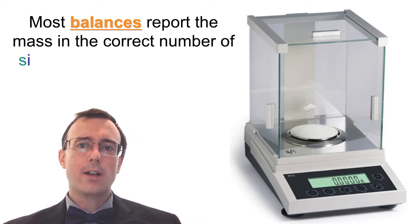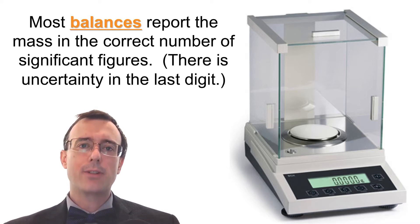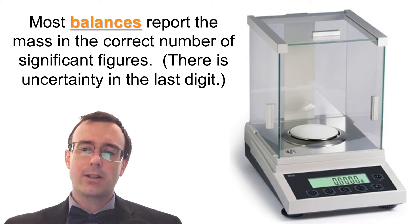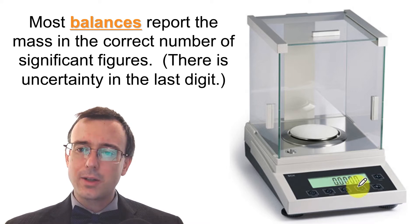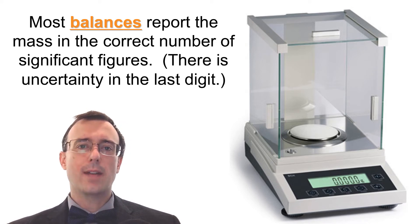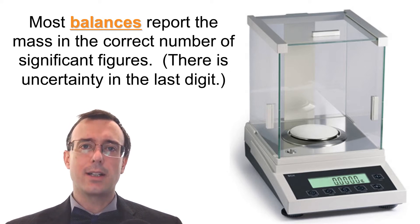Let's start off talking about the different types of measuring devices we're going to be using commonly. Balances are fairly easy — they report mass in the correct number of significant figures. The last digit you see on the balance, for example 0.00000, is uncertain. Write down whatever mass the balance reports, and if there's a zero at the end, make sure you write that zero because it is significant.